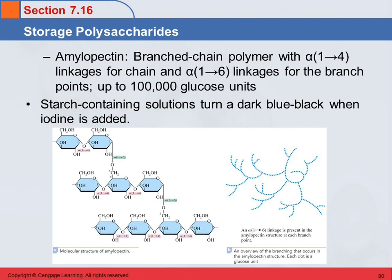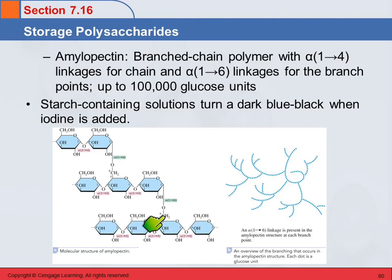The other kind in starch is amylopectin, which is a branched chain polymer. The basic chains have alpha-1,4 linkages, but to form a branch we need something else, because each glucose unit can only form two alpha-1,4 glycosidic linkages — it's got one head and one tail. To get branching, we have an alpha-1,6 linkage, where the alpha on carbon-1 of one unit connects to carbon-6 on another. That forms a branch, and then off that branch you can get more branches. Each dot in the illustration represents one glucose unit, showing how amylopectin branches out.